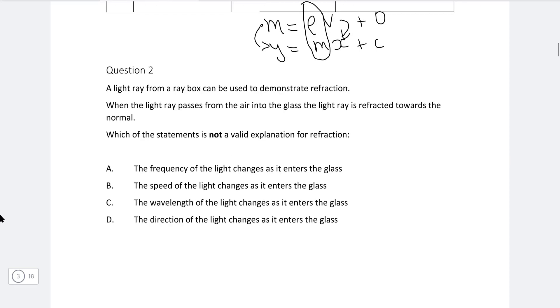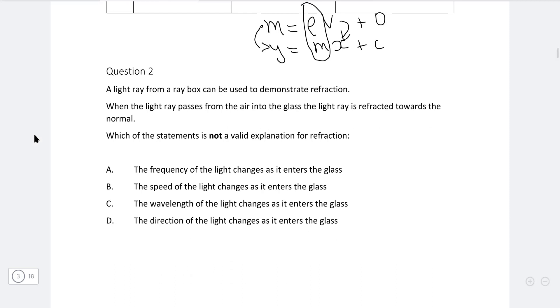Okay, question two: we have a light ray from a ray box that can be used to demonstrate refraction. When the light ray passes from the air into the glass, the light ray is refracted towards the normal. Which of the statements is not a valid explanation for refraction?